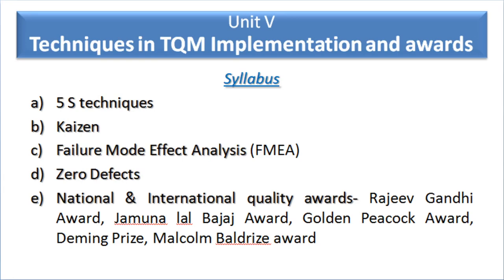Unit number five is techniques in TQM implementation and the various awards. The syllabus covers various TQM implementation techniques like kaizen, 5S, FMEA analysis, and zero defect technique. There are also certain awards mentioned in this unit — some are national awards and three are international quality standard awards.